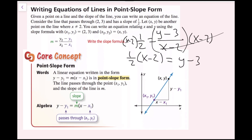A linear equation written in the form y minus y1 equals m times the quantity x minus x1 is in point-slope form. The line passes through the point (x1, y1) and the slope of the line is m. Make sure you write that down in your notebook.